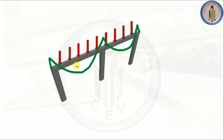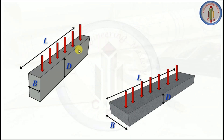Looking at the cross-section, this is the depth of the beam and this side is the width of the beam. Since the load is applied in the vertical direction, if the depth is more, then the beam will have greater stiffness to resist the load in this section.